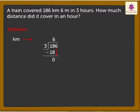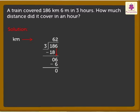Bring down the digit 6. As 6 is greater than 3, we divide. 2 times 3 is equal to 6, so we place 2 in the ones place in the quotient, and write the number 6 under 6. Now subtract 6 from 6, which is equal to 0. Here, we got the quotient as 62 kilometers.